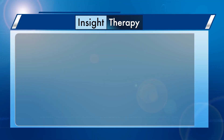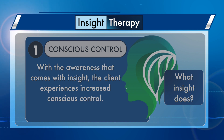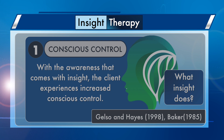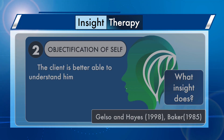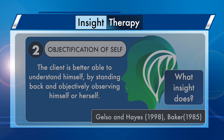With the awareness that comes with insight, the client experiences increased conscious control. When needs, impulses, and strivings are brought under conscious control, the client is better able to make logical choices and is less driven by self-destructive and non-productive patterns of behavior. Insight helps us tame our automatic ways of reacting and behaving. It is also through objectification of self — the client is better able to understand himself by standing back and objectively observing himself, which gives a clearer and more accurate perspective.